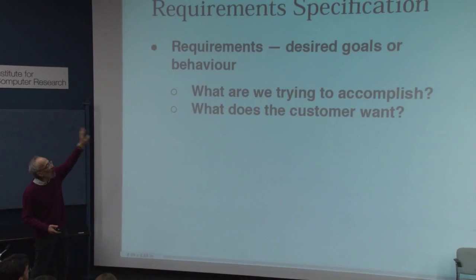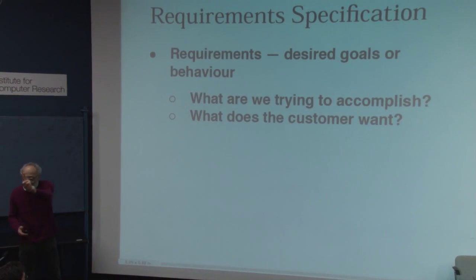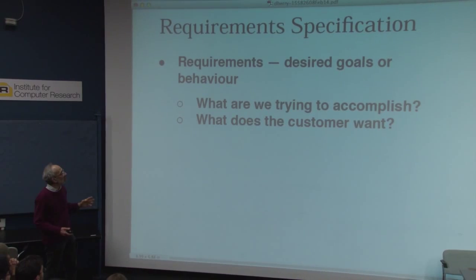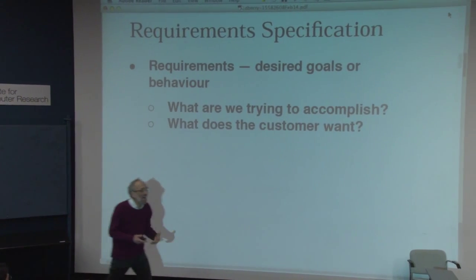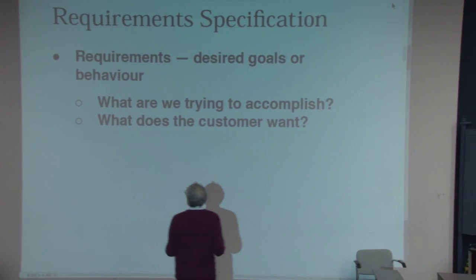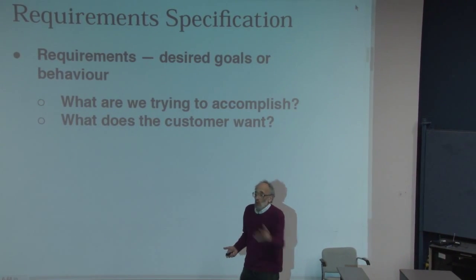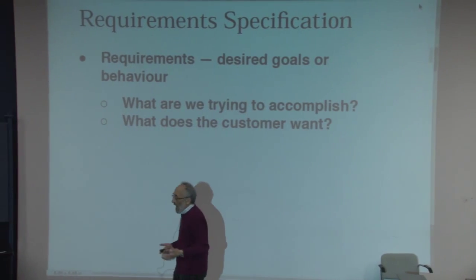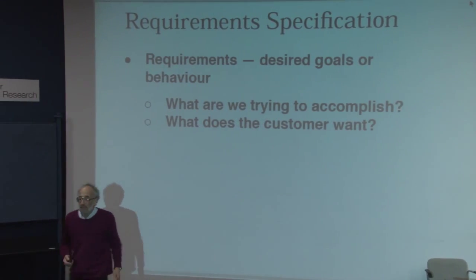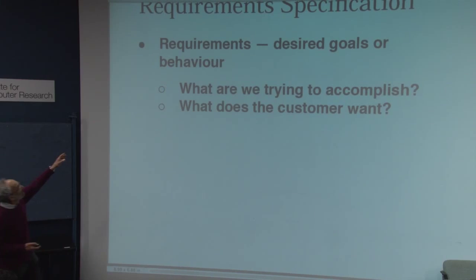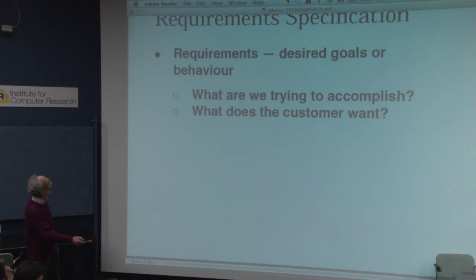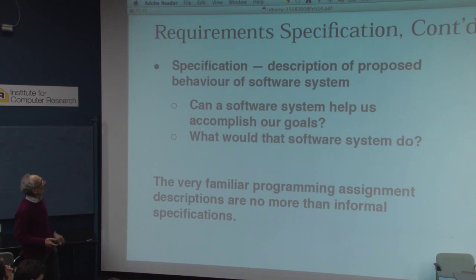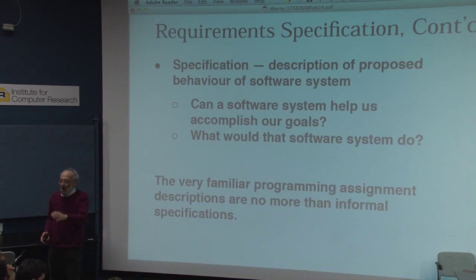The term 'requirement specification' consists of two words. The first word, 'requirement,' is simply the desired goal or behavior of the software that you want — what you're trying to accomplish, what the client wants, the customer wants. The second word, 'specification,' is a written description of the requirement.